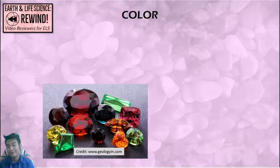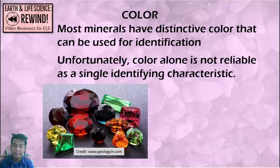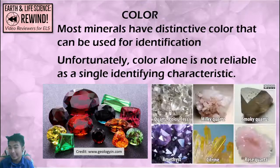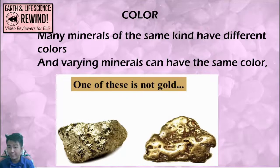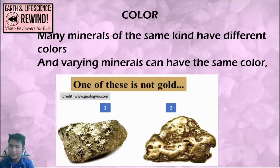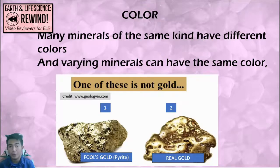The first characteristic is color. Most minerals have distinctive colors that can be used for identification, but unfortunately color alone is not reliable. For example, clear, milky, smoky, rose, citrine, and amethyst are all the same mineral — quartz. Also, varying minerals can have almost the same color. One of these is not really gold — one is fool's gold or pyrite, and the other is real gold. So color alone can be confusing.